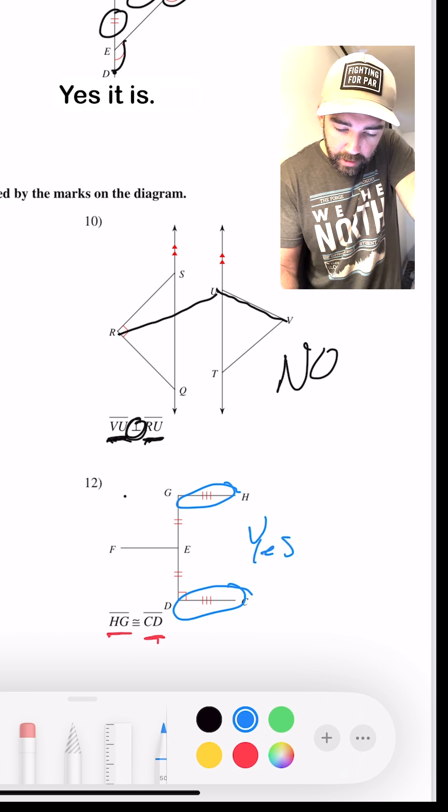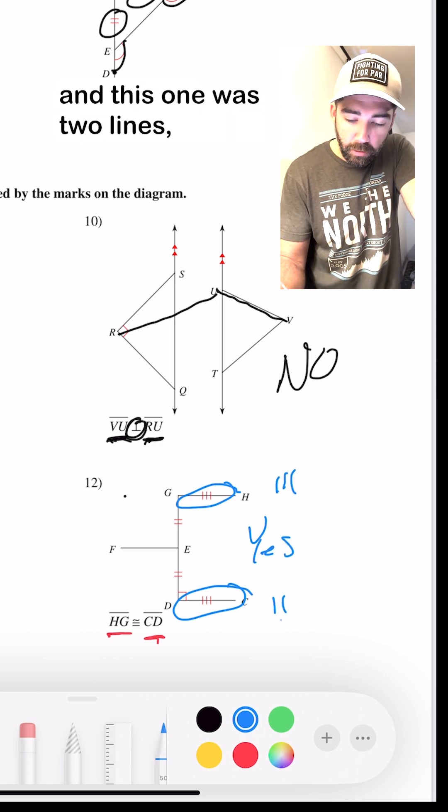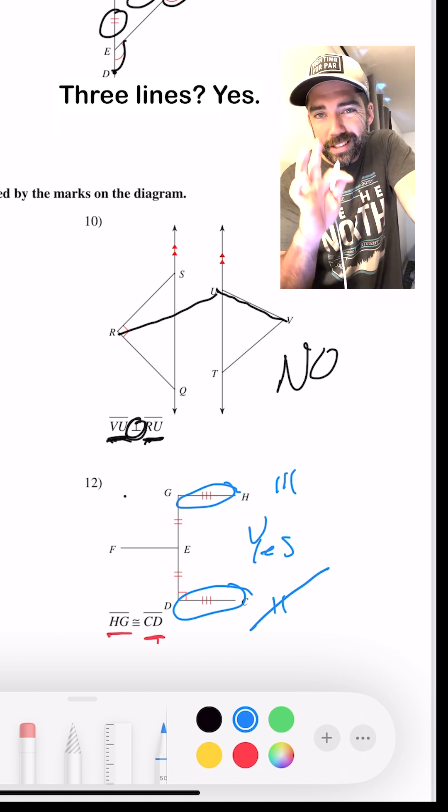Three lines, three lines. Yes, it is. If this one was three lines and this one was two lines, then that answer would be no. But it's three lines, three lines. Yes, we're congruent.